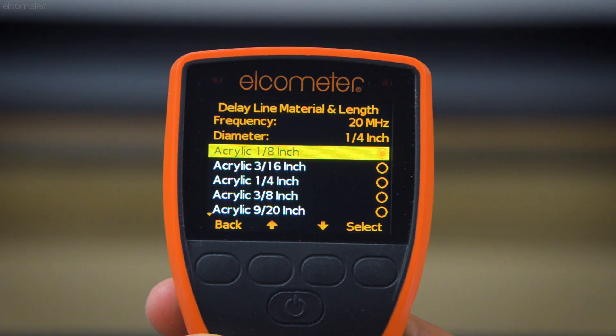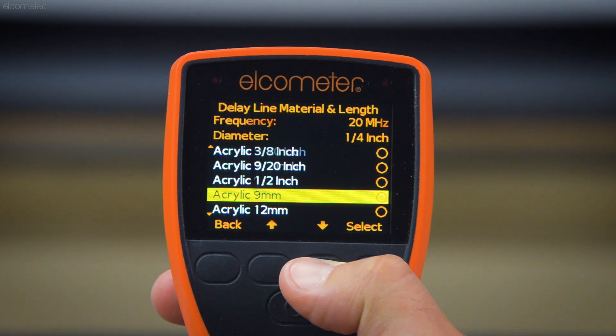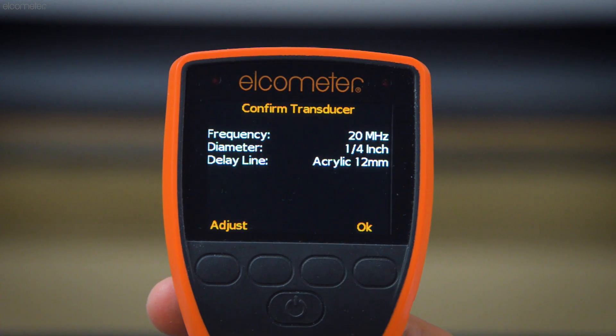You simply input the length and material of delay line before starting, and the gauge will subtract it from future measurements, leaving just the thickness of the material.